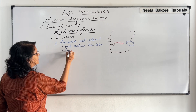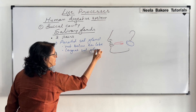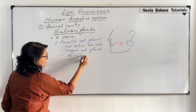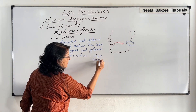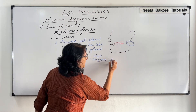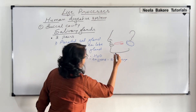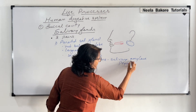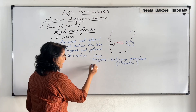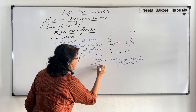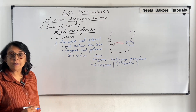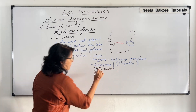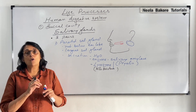Its secretion mainly contains water and an enzyme called salivary amylase, which helps in digestion of starch. Another name for this enzyme is ptyalin. It also secretes another enzyme called lysozyme, which kills bacteria. Such substances are called bactericidal — they kill or cause rupturing of bacteria.